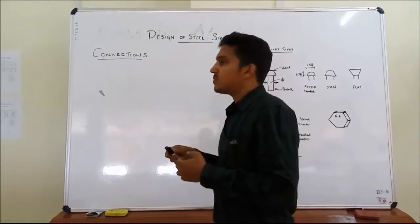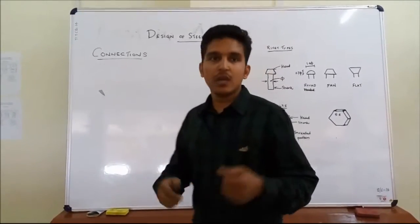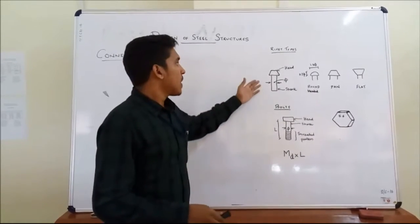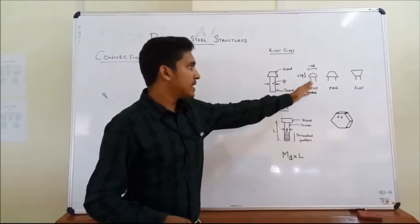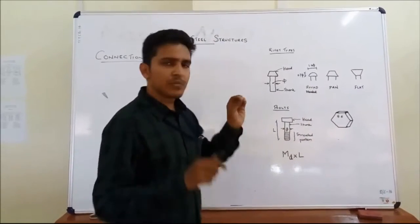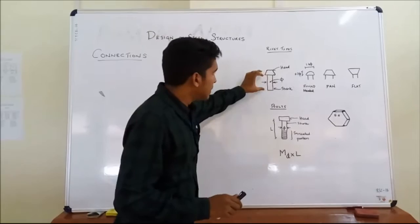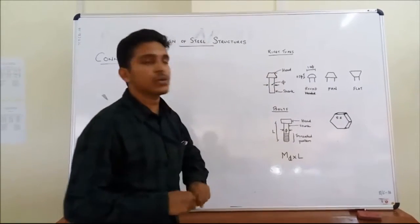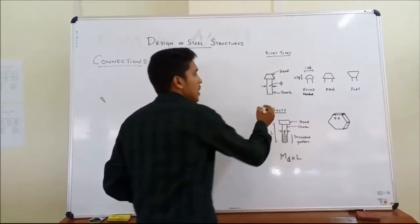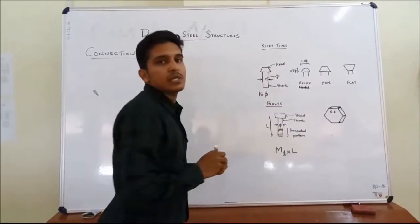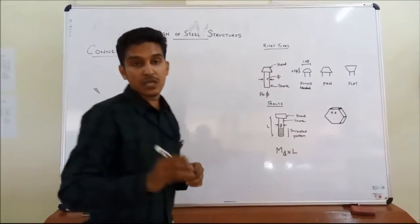Let us see what is rivets and bolts. Rivets, there are different types of rivets based on the head, that is round-headed, pan-headed, flat. How you represent a rivet? It is represented by the shank diameter, that is the diameter of the shank. A normal diameter is 16mm diameter, is the normal diameter used for rivets in steel structures.